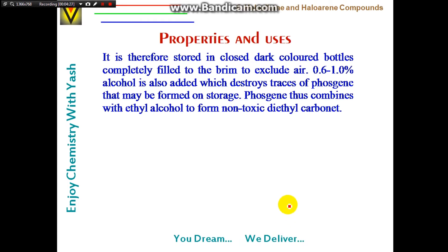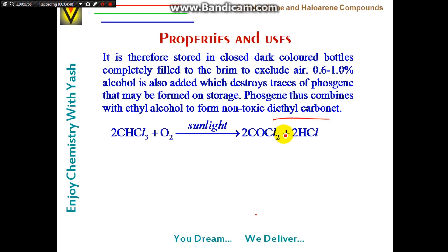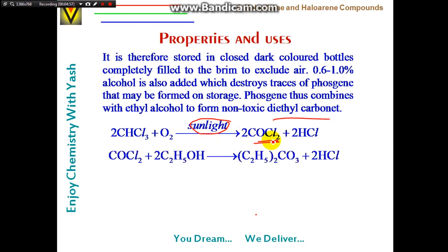To prevent phosgene formation, chloroform is stored in closed dark-colored bottles, completely filled to the brim to exclude air. About 0.01% ethanol is also added, which destroys any traces of phosgene produced during storage by reacting with it to form non-toxic diethyl carbonate and HCl. Thus toxic phosgene is converted into non-toxic diethyl carbonate.